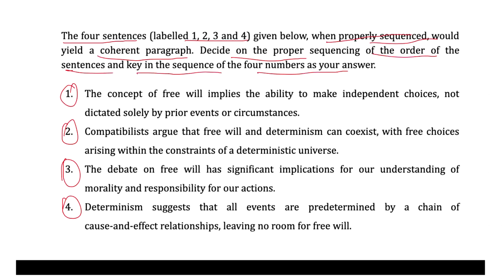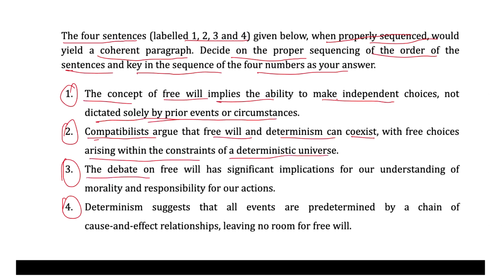Let's look at each of the sentences and understand how they are connected. The first one states: the concept of free will implies the ability to make independent choices not dictated solely by prior events or circumstances. The second one states: compatibilists argue that free will and determinism can coexist, with free choices arising within the constraints of a deterministic universe. Third: the debate on free will has significant implication for our understanding of morality and responsibility for our actions. Fourth: determinism suggests that all events are predetermined by a chain of cause and effect relationship, leaving no room for free will.